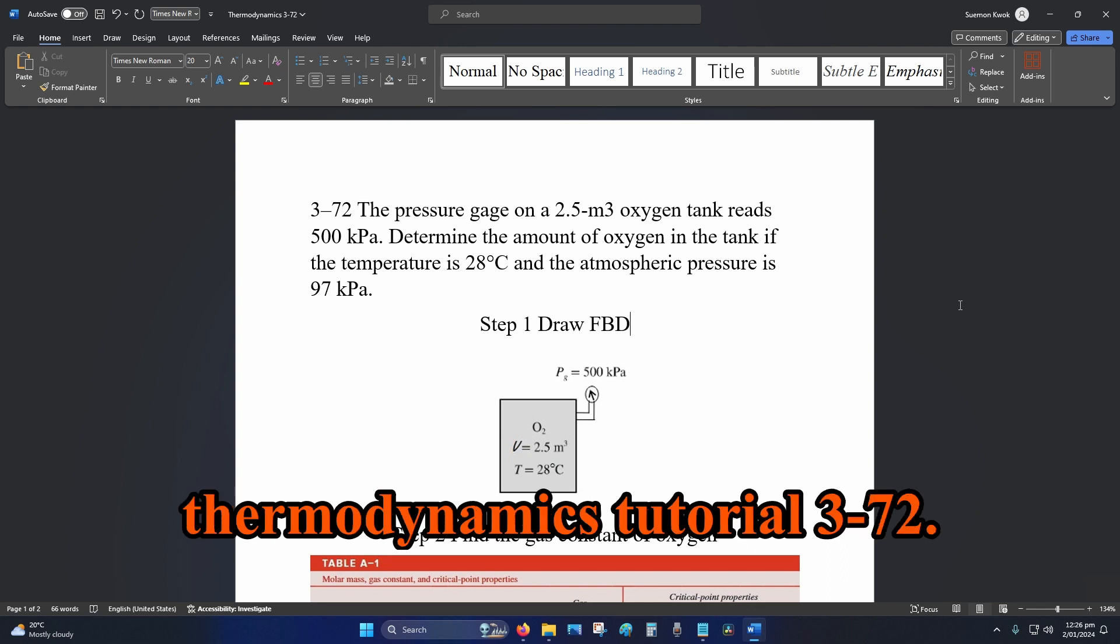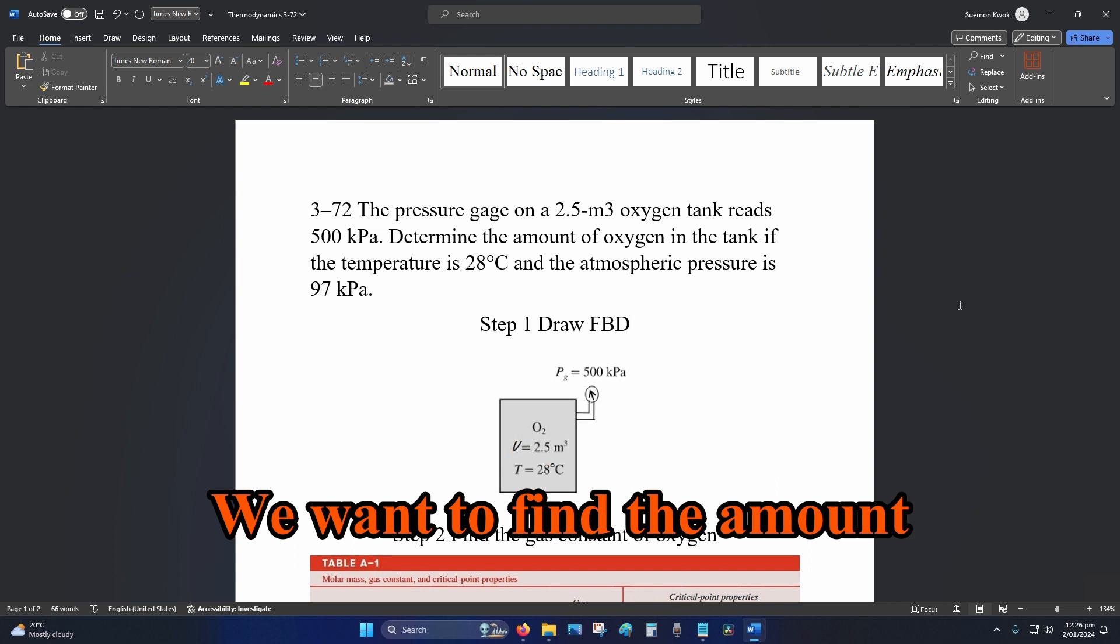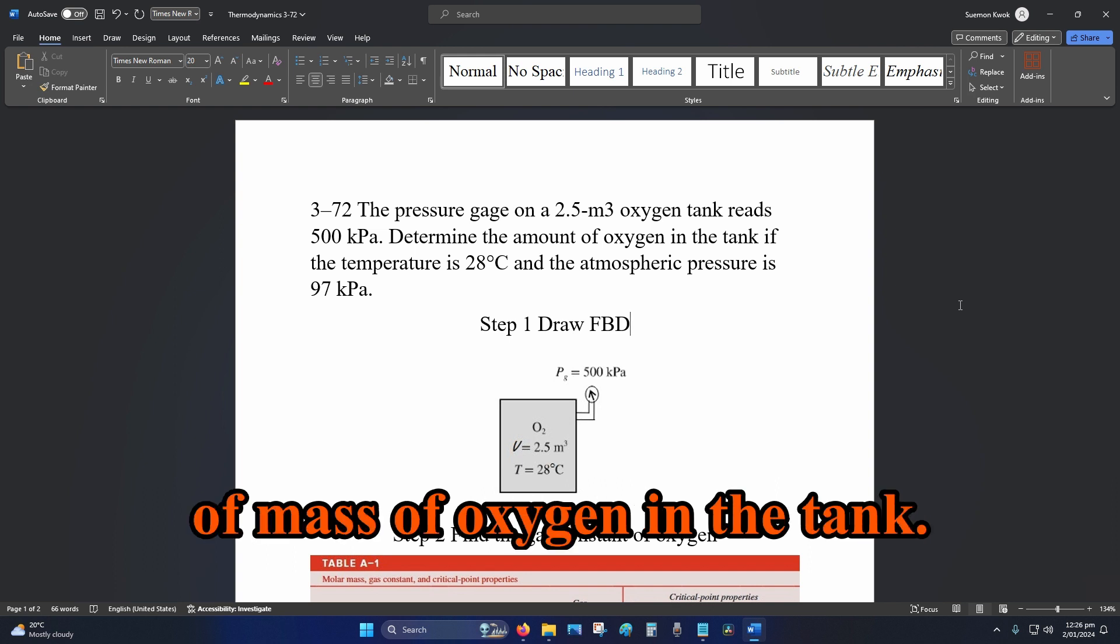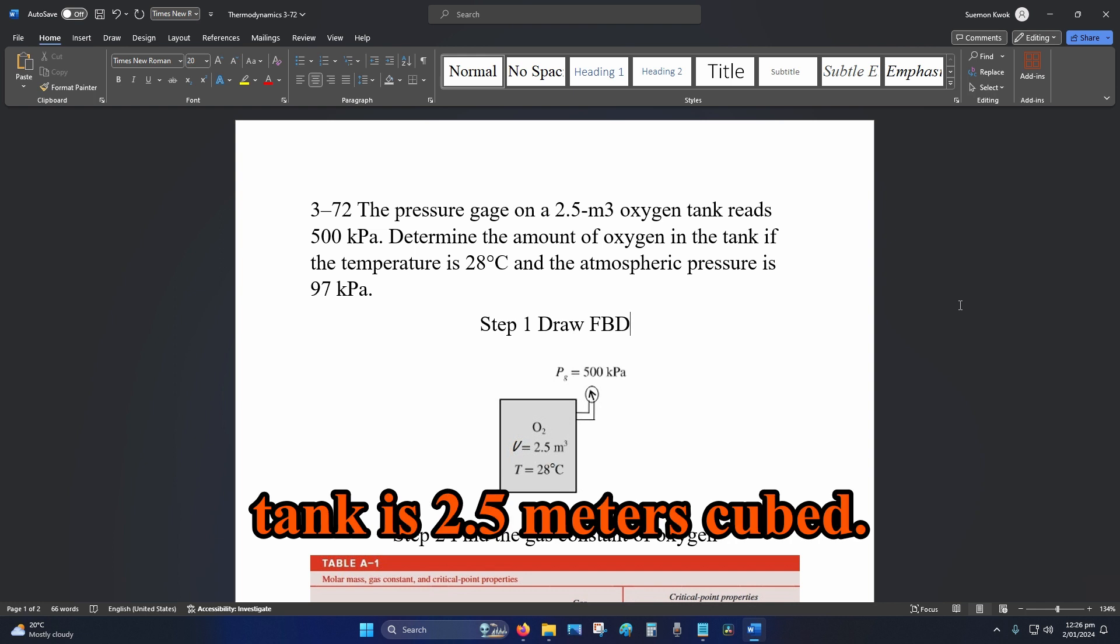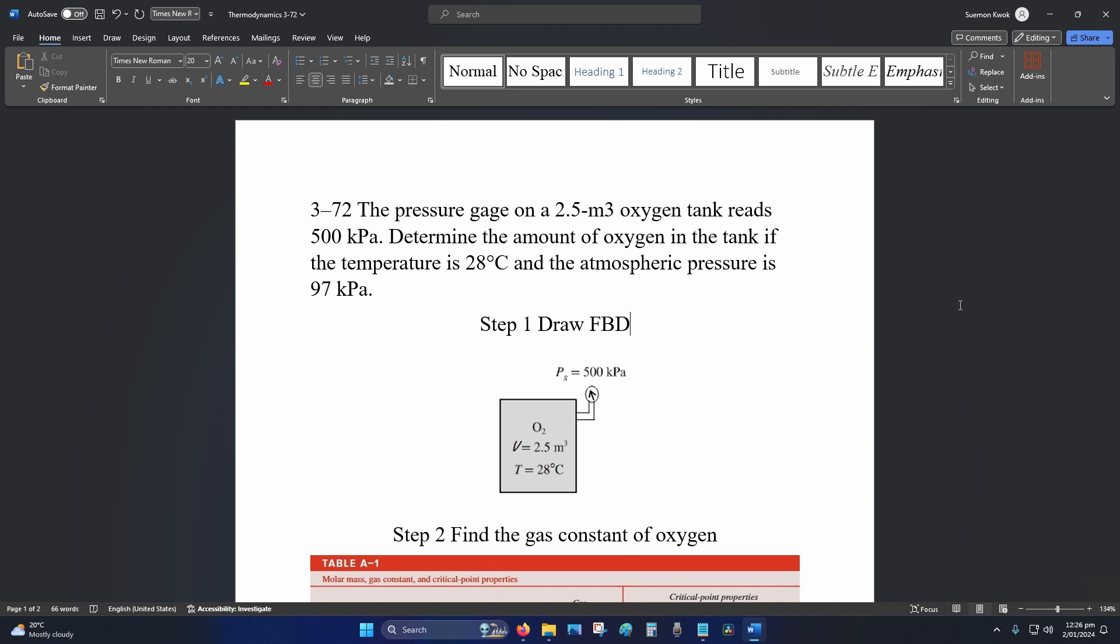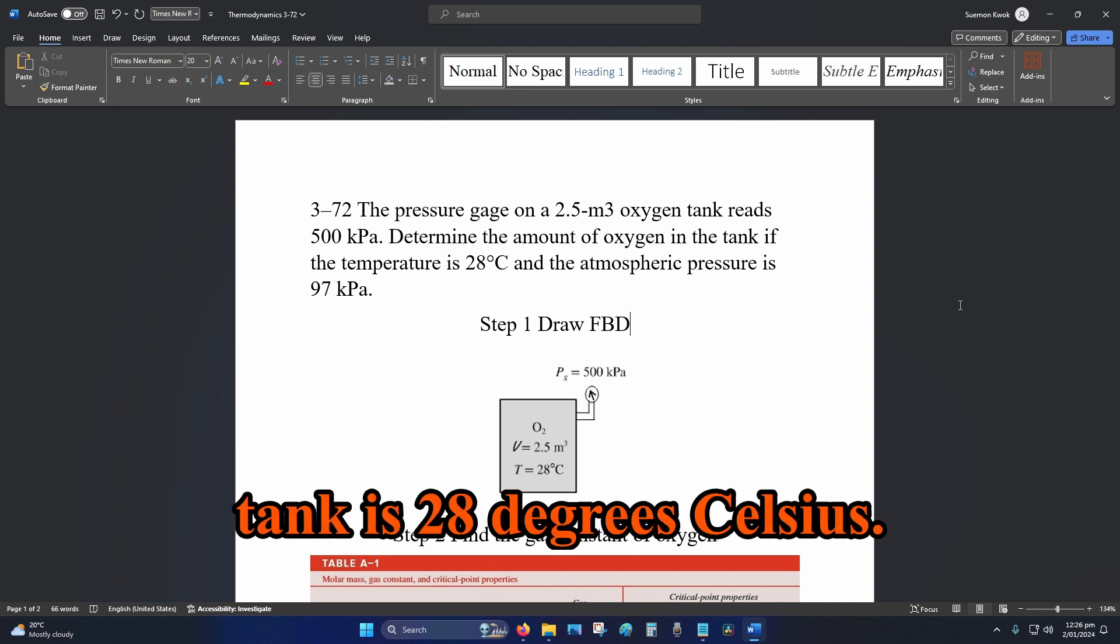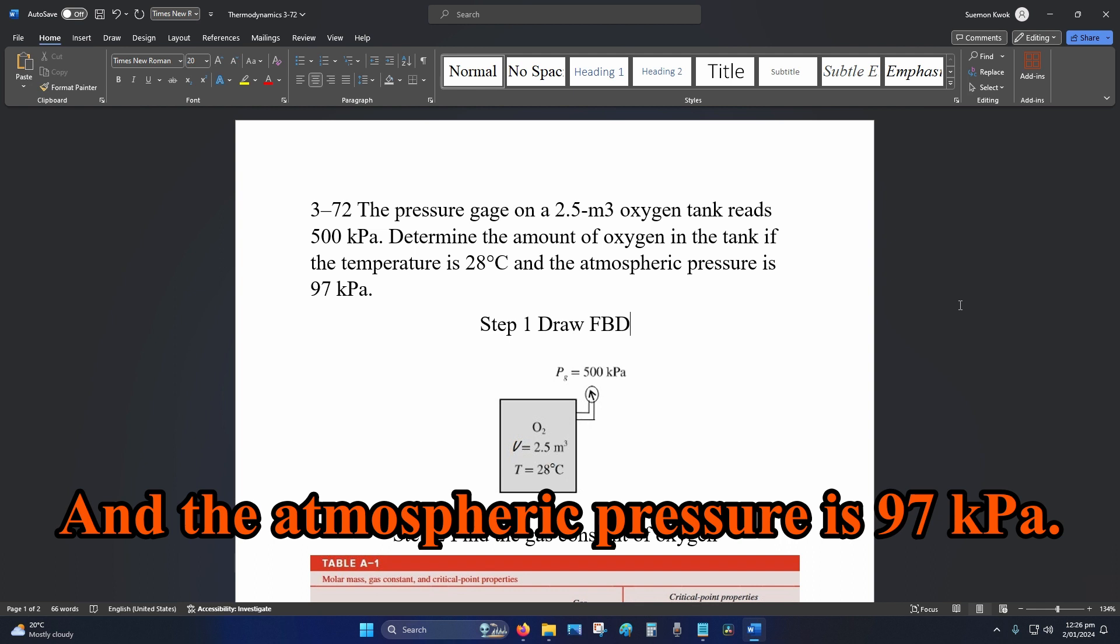Hey internet, welcome to thermodynamics tutorial 3-72. We want to find the amount of mass of oxygen in the tank. The volume of the tank is 2.5 meters cubed, the gauge pressure is 500 kPa, the temperature in the tank is 28 degrees Celsius, and the atmospheric pressure is 97 kPa.